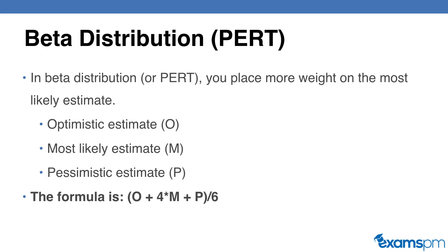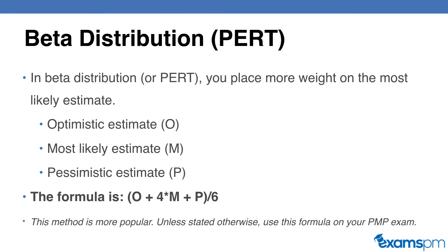For your PMP exam, you will most likely be asked to calculate the beta distribution. This method is more popular, so unless the exam question states that you have to use a triangular distribution, assume that you are using the beta distribution.